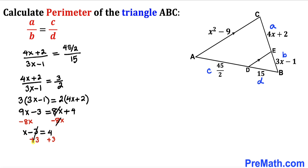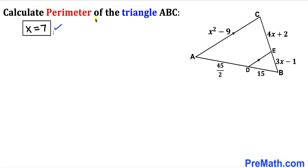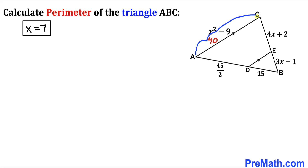Adding 3 on both sides, our x value turns out to be 7. Now we will substitute x equals 7 into all expressions. For side length AC: x squared minus 9 becomes 7 squared minus 9, which is 49 minus 9, giving us 40. So side length AC is 40 units.